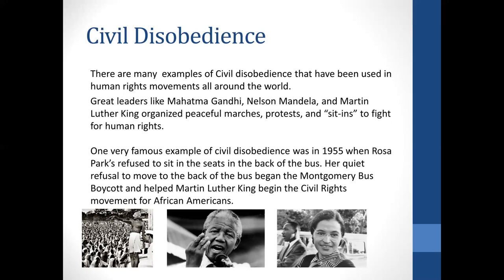There are many other examples of civil disobedience used in human rights movements around the world. Leaders like Mahatma Gandhi, Nelson Mandela, and Martin Luther King organized peaceful marches, protests, and sit-ins to fight for human rights. A very famous example was in 1955 when Rosa Parks — seen in the picture in the right-hand corner — refused to sit in the seats at the back of the bus. Her quiet refusal began the Montgomery bus boycott and helped Martin Luther King launch the civil rights movement.